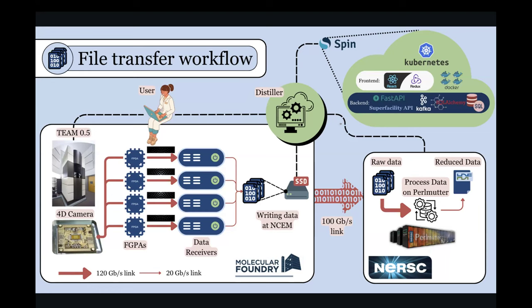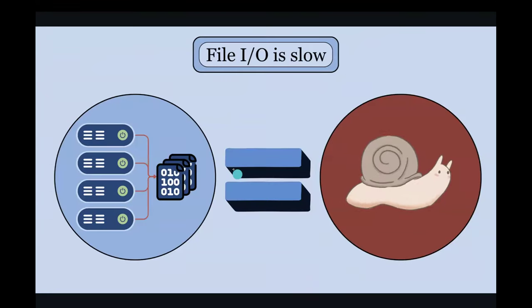So here's the issue with this workflow. File I/O is generally, especially for these really large data sets, really slow. So you have these four servers that each write to binary files on that network file system. And for that really large data set, it takes about two and a half minutes to do that. So the user clicks scan and they have to wait two and a half minutes just for their data to be on the disk.